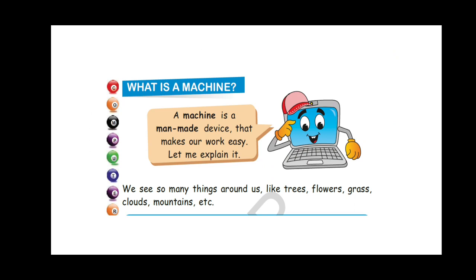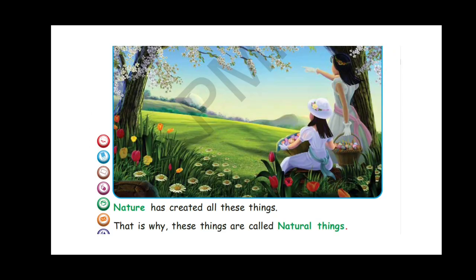We see so many things around us like trees, flowers, grass, clouds, mountains, etc. Now, all these things have been created by nature. That is why these things are called natural things.